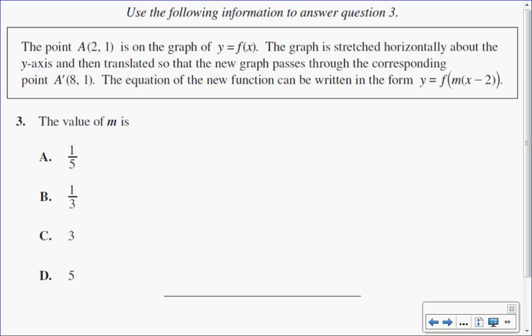In this multiple choice question, we're given a point A(2, 1) that is on an original graph of f(x). Now the graph is horizontally stretched about the y-axis and translated so that the new graph passes through the point (8, 1). The equation of the new function is given in the form y = f(mx - 2).